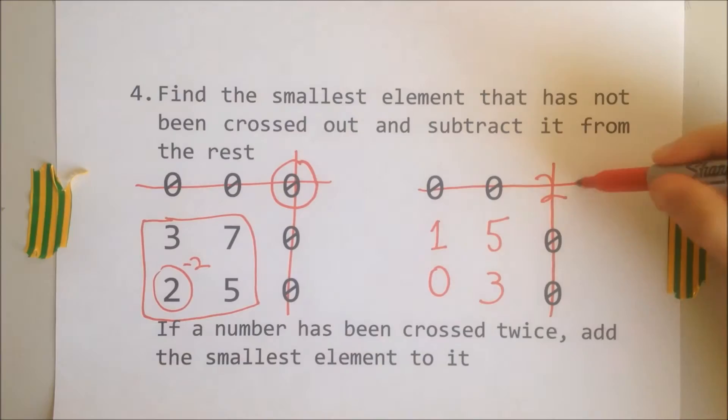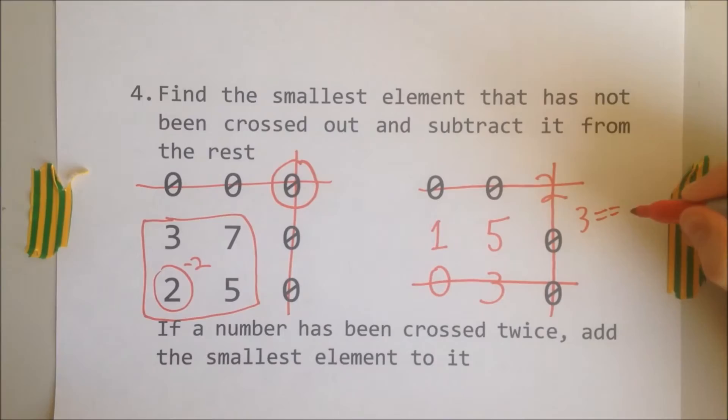Now we can start to draw the lines on again. And as you can see, we've drawn three lines, which means we can move on to pairing workers to jobs.